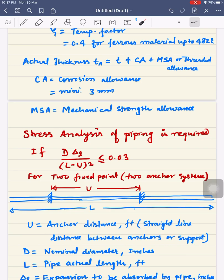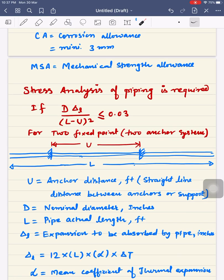But there are other criteria also to see if stress analysis of the piping is required. It is given by API 14E. If D times delta L divided by (L minus U) squared is less than 0.03, then you need a stress analysis of piping.